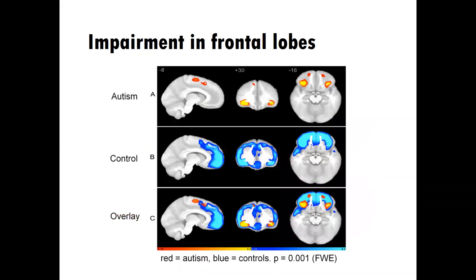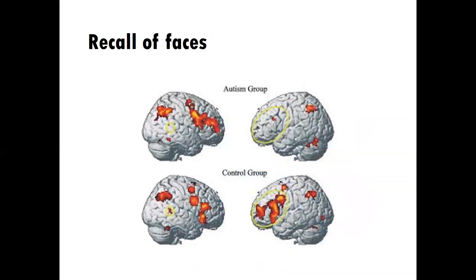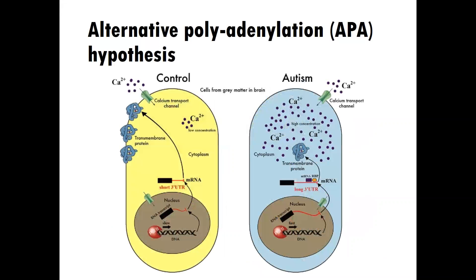Then we'll move into learning about autism. We'll look at the impairment in the frontal lobes, difficulties with recall of faces, and also look at some hypotheses for autism that haven't been proven yet but are fascinating, such as the alternative APA hypothesis.